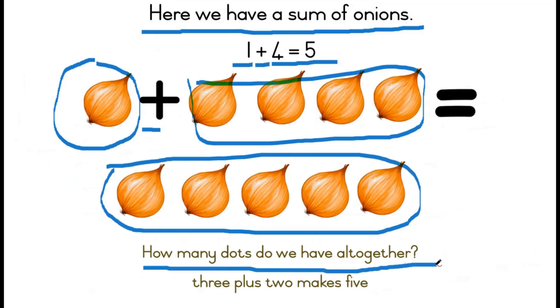How many dots do we have altogether? We started off with one, added in four, and got five. So three plus two makes five onions.